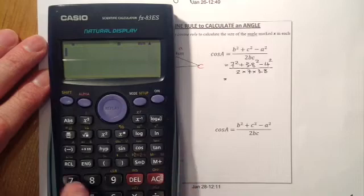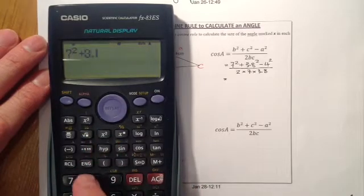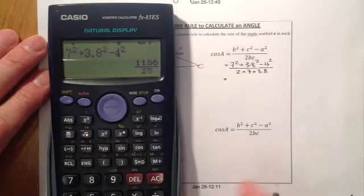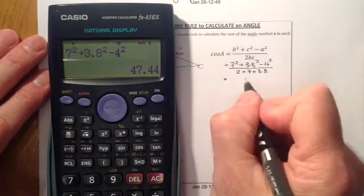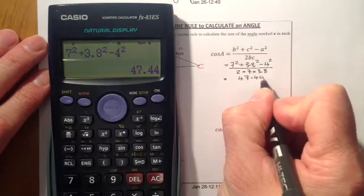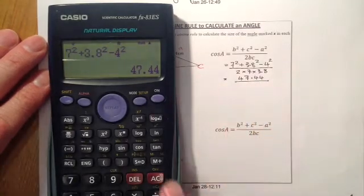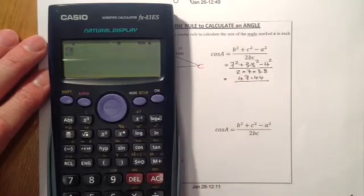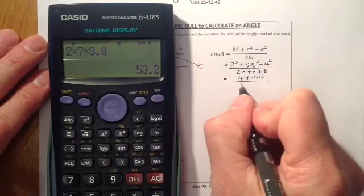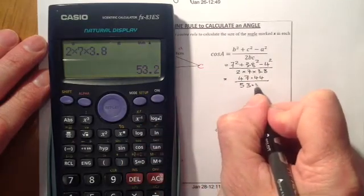First thing I'm going to go for is 7 squared, plus 3.8 squared, minus 4 squared. That's going to be equal to, on the numerator, I've got 47.44. That'll all be divided by 2 times 7 times 3.8.